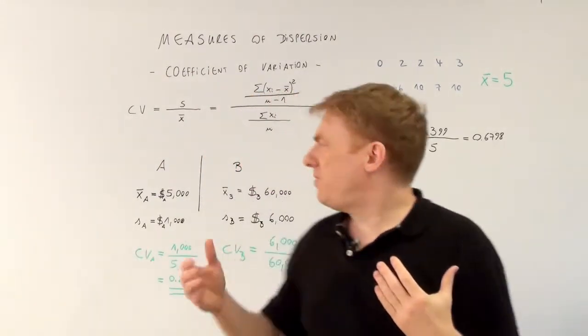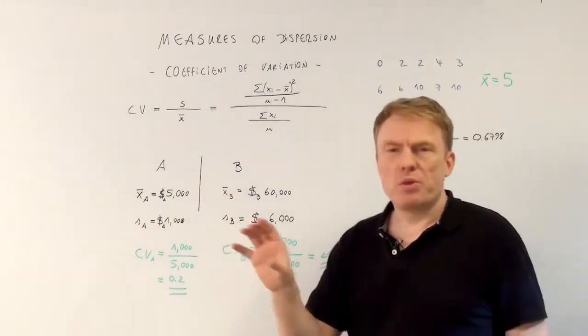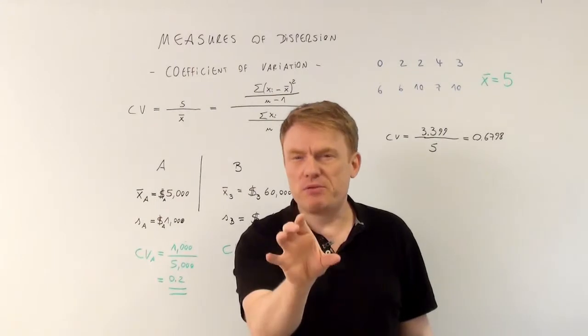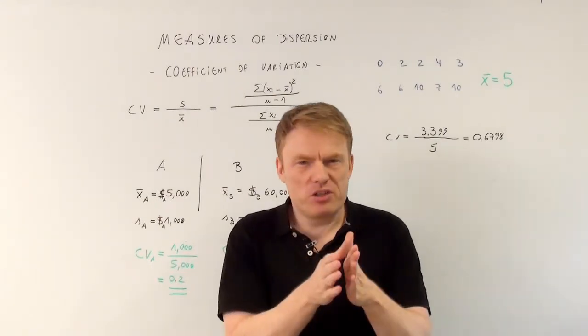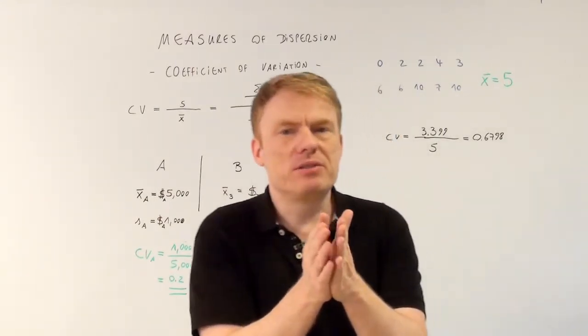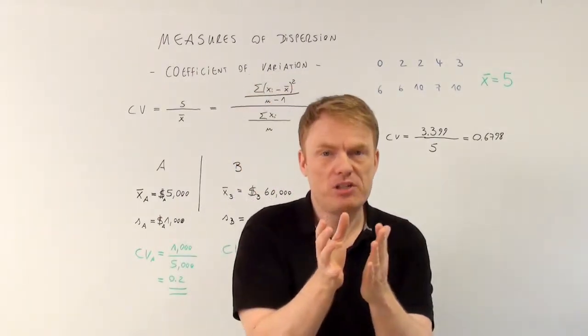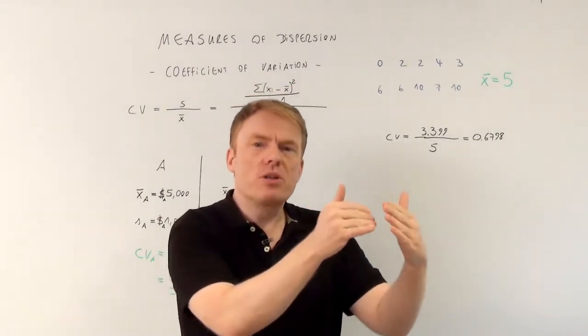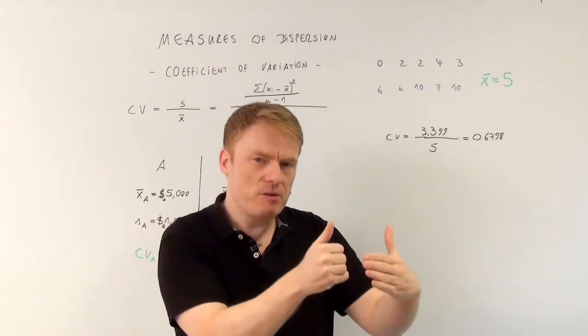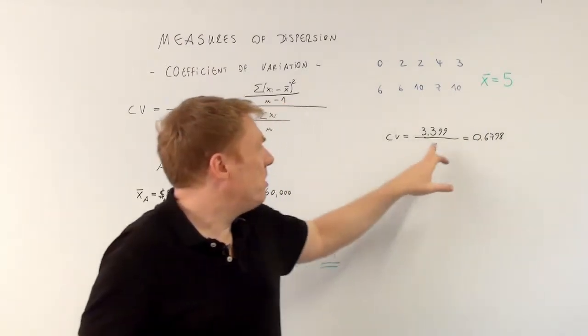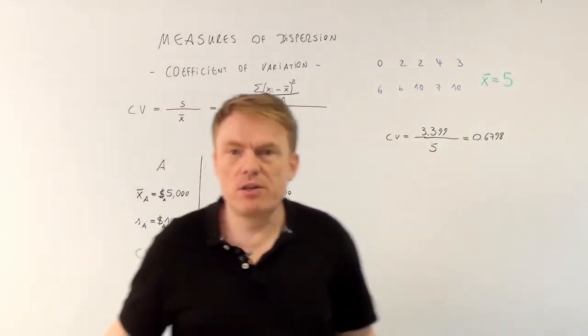So if there are different data with different arithmetic means, with different standard deviations, we could just look at a percentage value. The coefficient of variation is a percentage value. What part of the arithmetic mean is the standard deviation? Look at this for example.